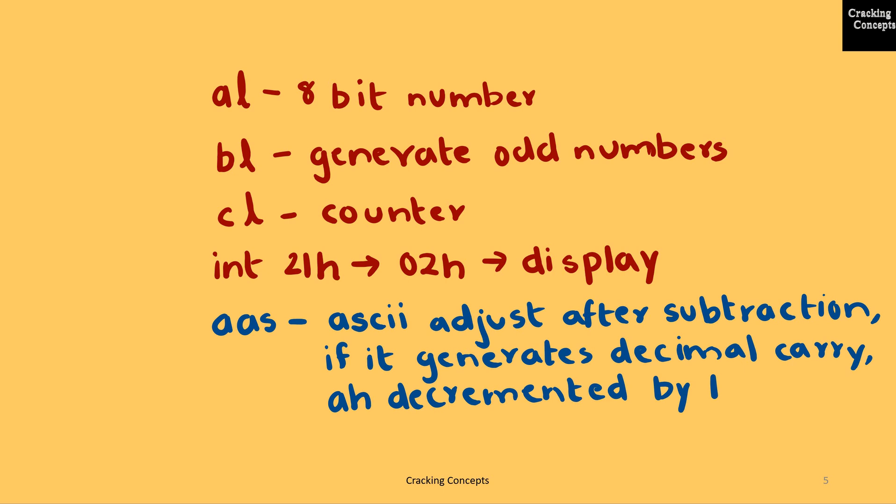Before beginning the program, we'll see what registers we'll be using. Since the number I am storing is an 8-bit number, I'll be using an 8-bit register, that is AL. BL will be the register I'm choosing to generate the odd numbers, and CL will be where I'll be storing the counter.